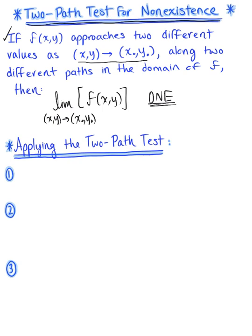So when we've exhausted all other options and we want to apply the two-path test, we're going to follow the following strategy. The first thing that we're going to do is find the domain of the function — we want to find the domain of f.